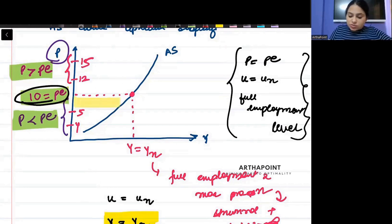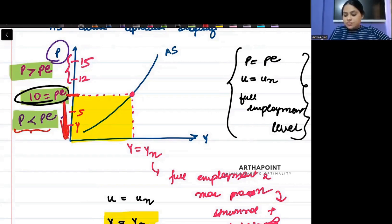There is no unemployment except frictional and structural. You are at full employment limit. Now study this region. In this region, what do I see? P is less than PE. Actual price, my expectation is this. A point. Actual price is less than my expected price.